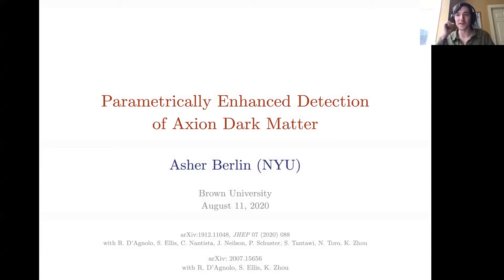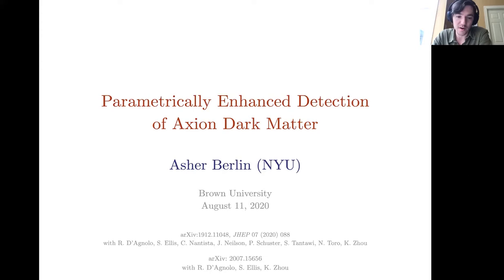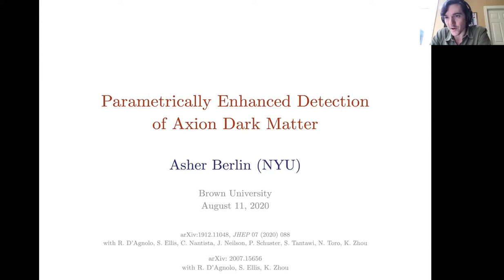This talk is based on work finished at the end of last year, along with some extension upon an idea that appeared on the arXiv just recently. The first paper was with experimentalists at SLAC, whereas the second paper was exclusively theorists. The central theme is to discuss new ways to look for axion dark matter in the case that it couples to electromagnetism — through its coupling to photons — with particular emphasis on axion dark matter below the micro-eV scale.